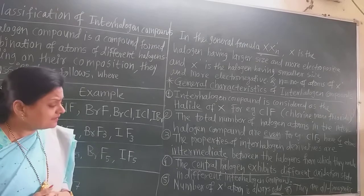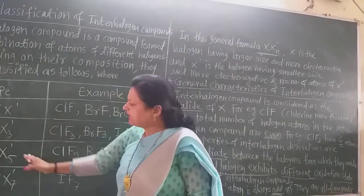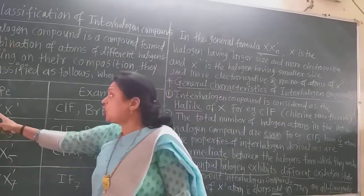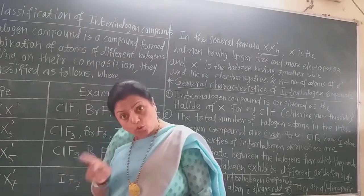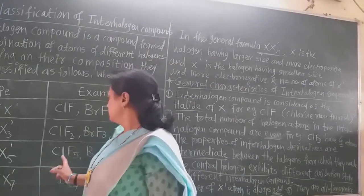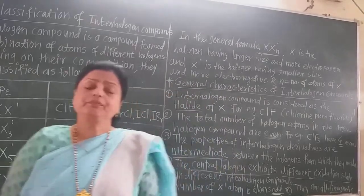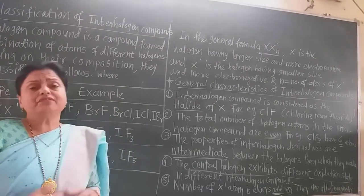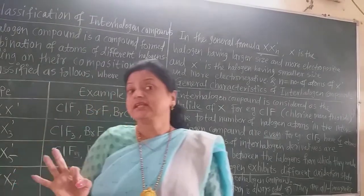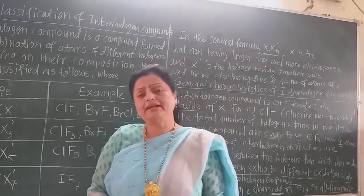The fifth characteristic: the number of X' atoms is always odd — 1, 3, 5, or 7. The total number of halogen atoms is even, but only the X' count is odd. The sixth and last characteristic: all interhalogen compounds are diamagnetic, meaning there are no unpaired electrons, so they are diamagnetic, not paramagnetic.